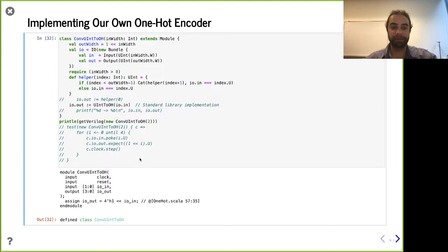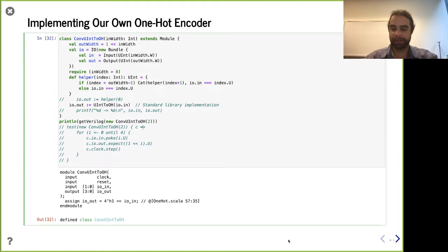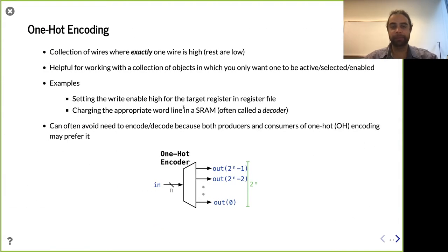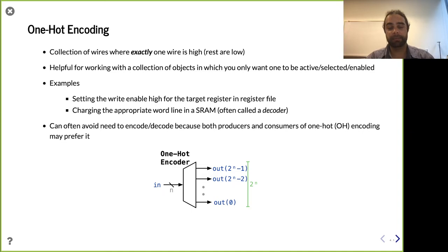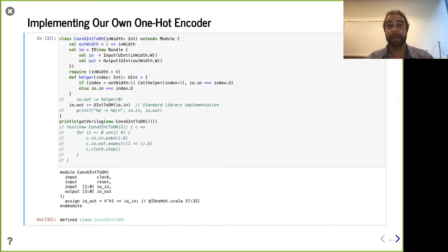The question was, why are we building this? The benefit of one-hot encodings will be more apparent later on. Speaking abstractly, you often use these when you have a collection of things and you want to do something to only one at a time, which happens a lot in architecture when you have entries or things and want to select only one. We'll see examples of using one-hot in the following content today, which should better motivate why we're building it.